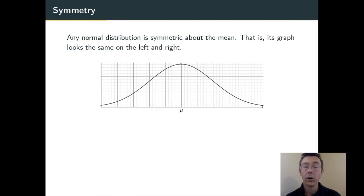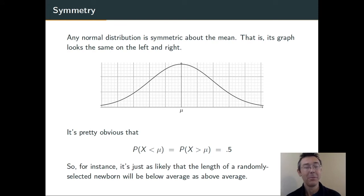The normal distributions are all symmetric about the mean. They look the same on the left and on the right. That means that the probability of getting a result less than the mean is the same as the probability of getting a result above the mean. So if we're talking about the lengths of randomly selected infants, we're just as likely to have one that is above average as below average.